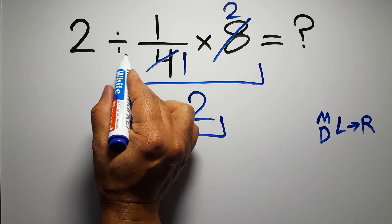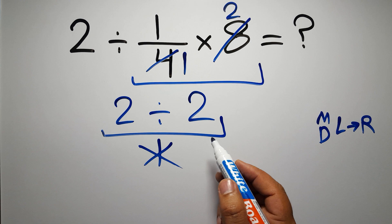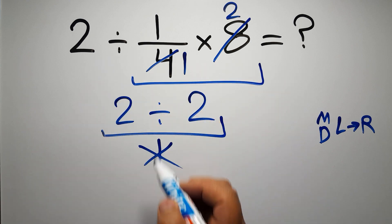So here first we have to do this division, then this multiplication. If we do this multiplication before this division, it is wrong.